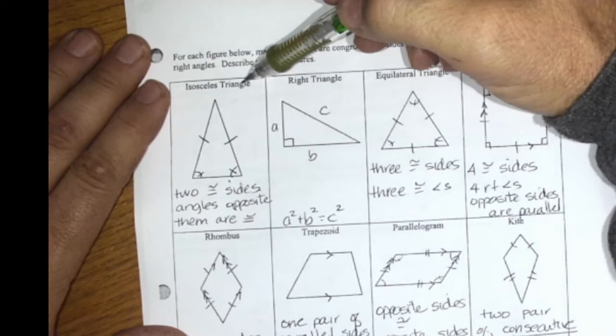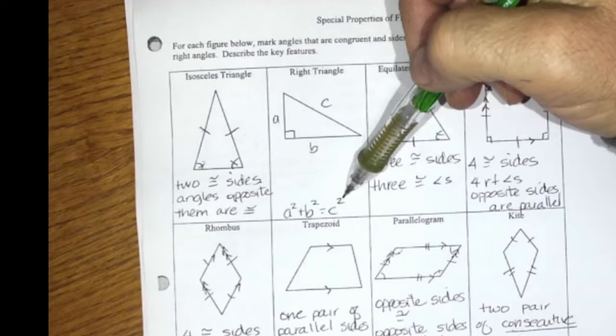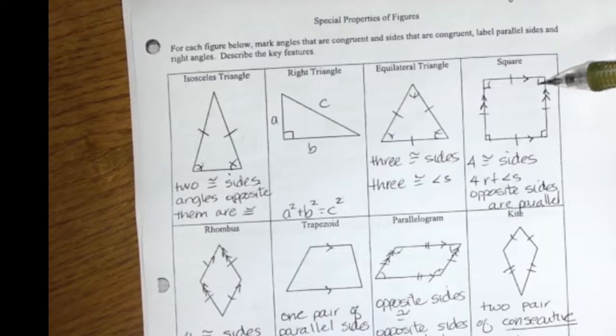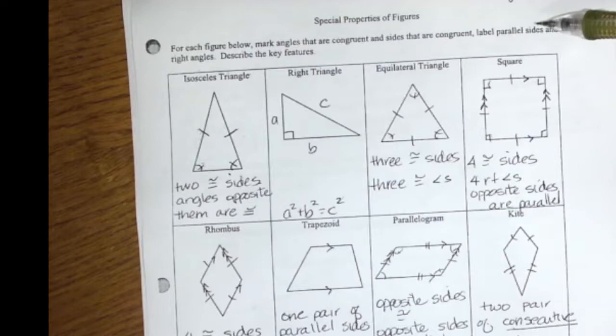And then these are just reviews. Talking about the definition. Isosceles triangle. These two angles are equal. And these two sides are equal. Right triangle. It's Pythagorean's Theorem. Equilateral means all the sides are equal. Square means 90 degrees on all of them. And the sides are all equal.